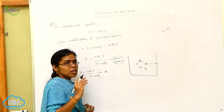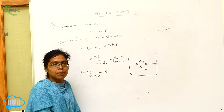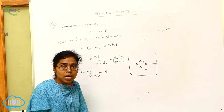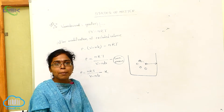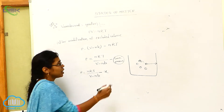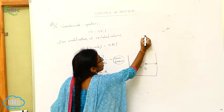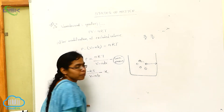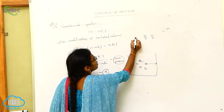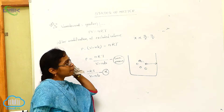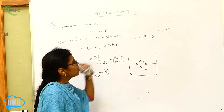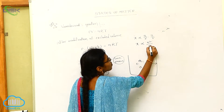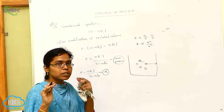Pressure always depends upon the concentration. The equation for concentration is number of moles by volume, N by V. For this molecule the concentration is N by V, and for this molecule also N by V. So X is always directly proportional to N/V into N/V. From this, X is directly proportional to N squared by V squared.